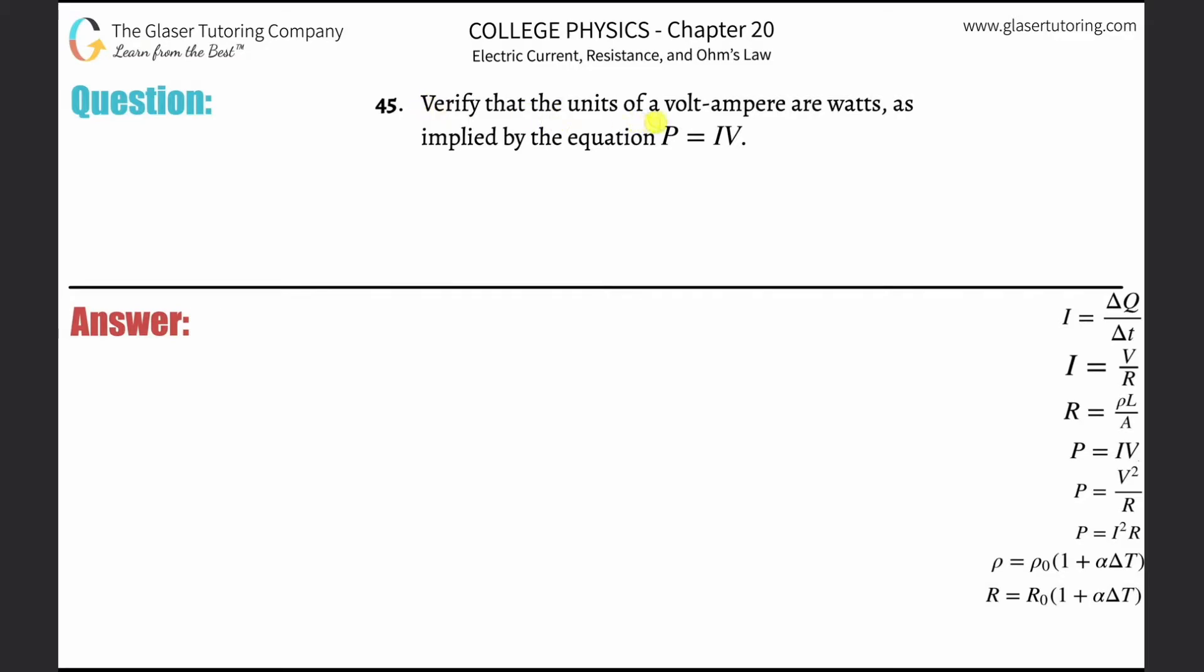Number 45, verify that the units of a volt-ampere are watts, as implied by the equation power equals current multiplied by voltage.